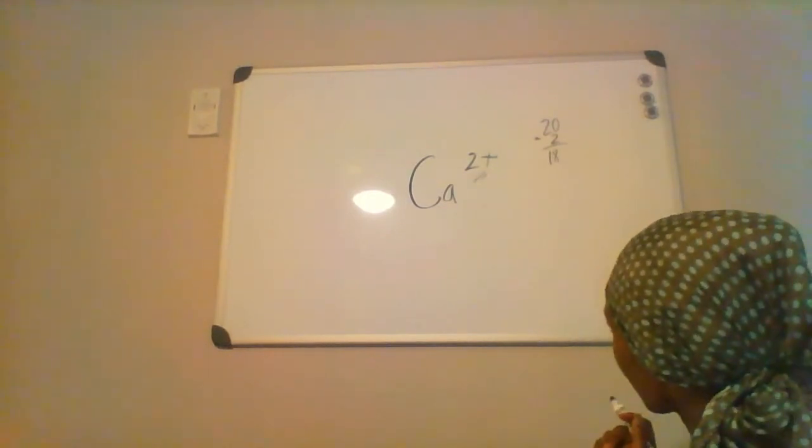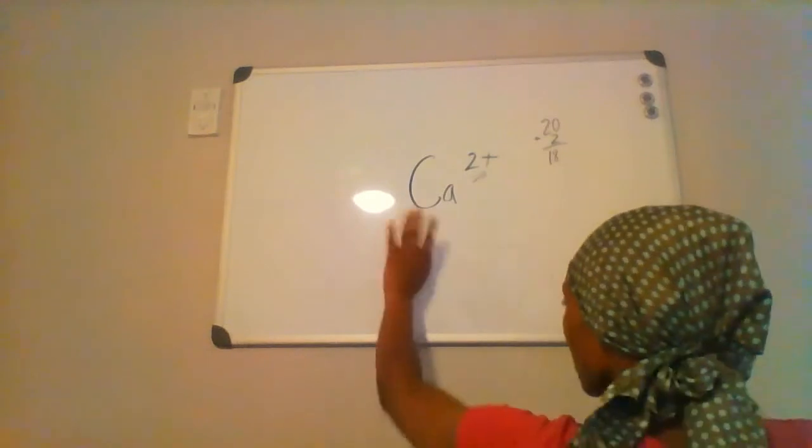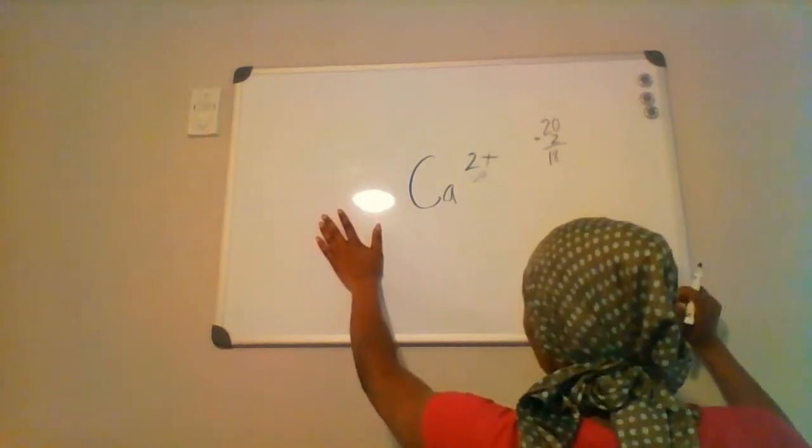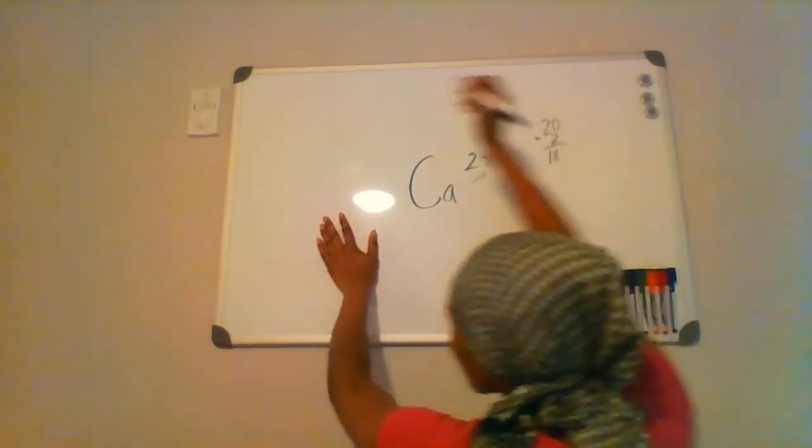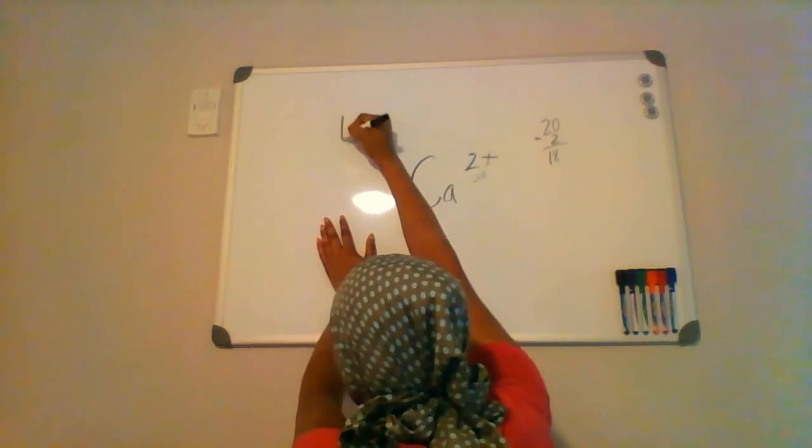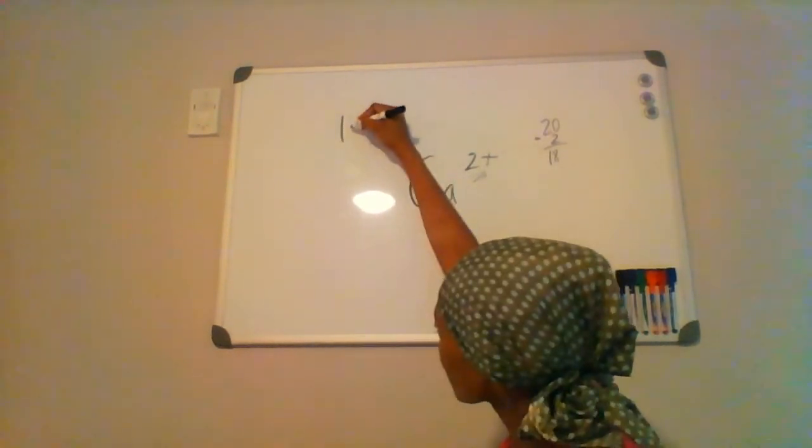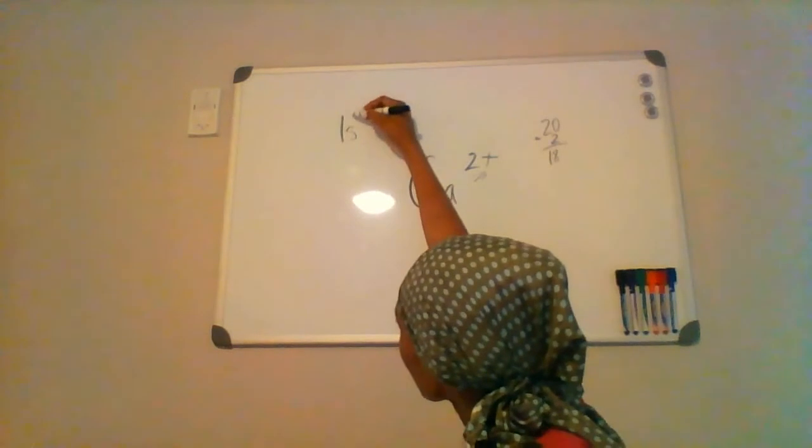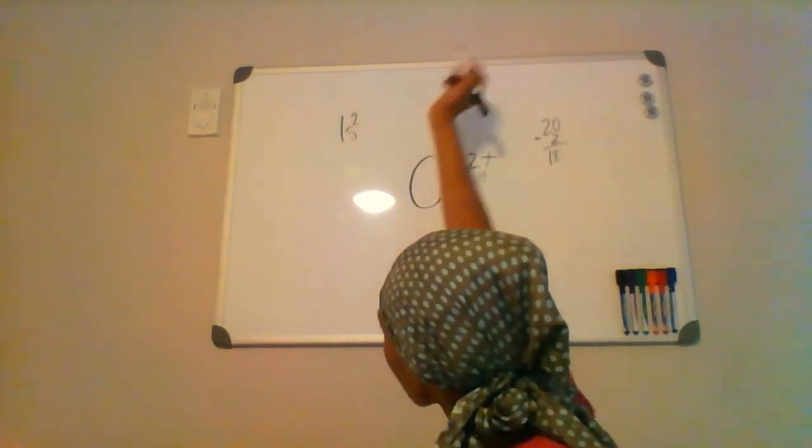So that should be enough to figure out the electron configuration. The first energy level we're going to fill is one, and it contains the s orbital, and that holds a maximum of two electrons.